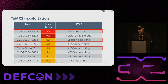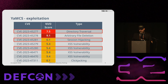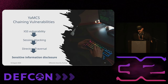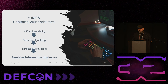Most of those vulnerabilities individually don't have that much of an impact on the mission. However, this is where the chaining of vulnerabilities comes into play. In the case of AMCS, we decided to combine directory traversal, session hijacking, and XSS. That led us to quite severe sensitive information disclosure, because when the XSS is triggered, the attackers can actually retrieve any arbitrary file stored on the AMCS server.